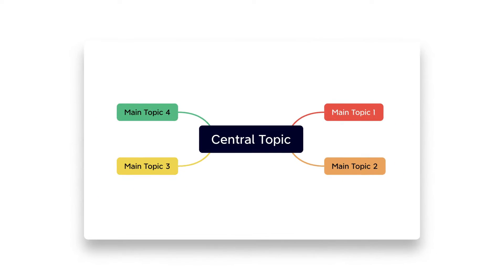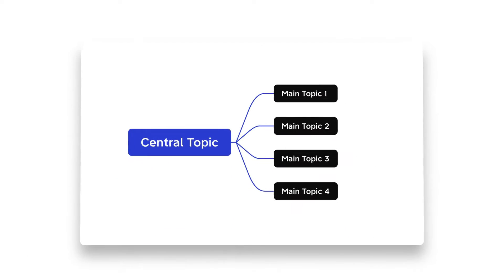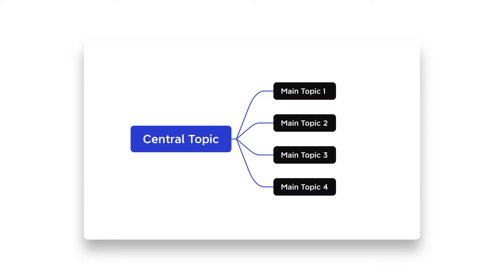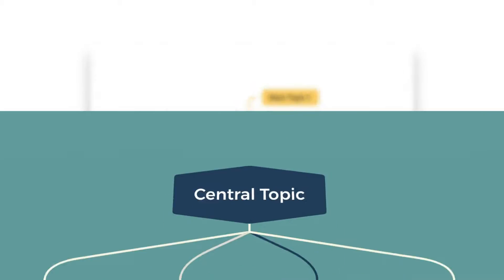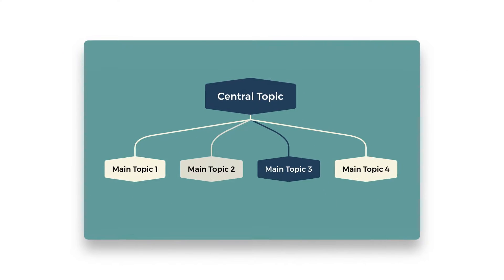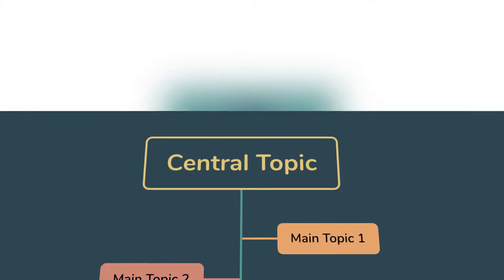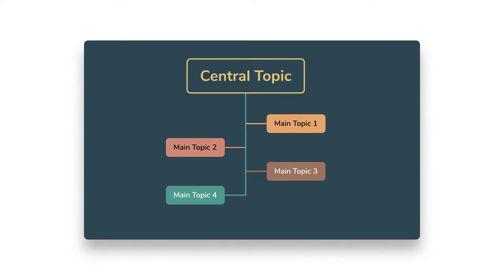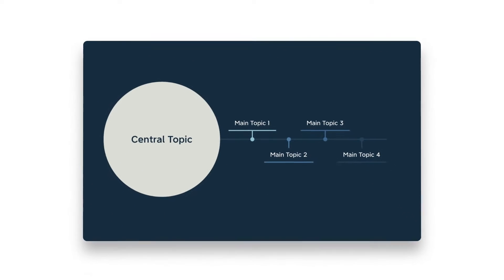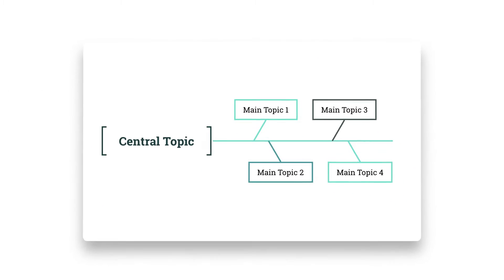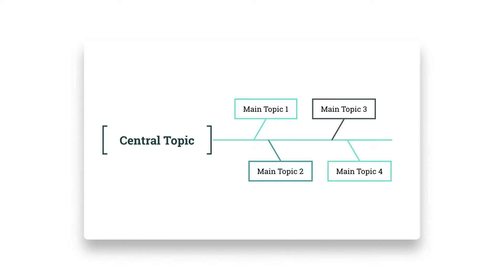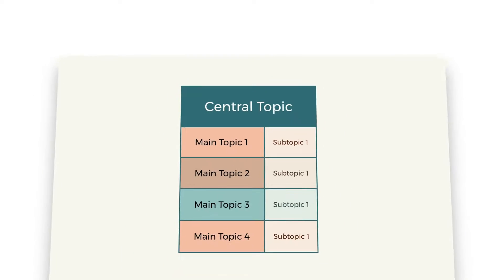These include the standard mind map, logic chart for evident links, brace map, org chart for hierarchy, tree chart for sorting, an attractive timeline, a cause and effect fishbone, tree table, and a multi-faceted matrix.